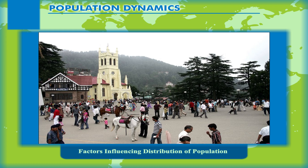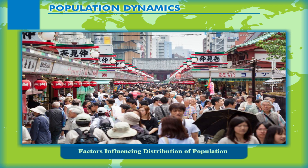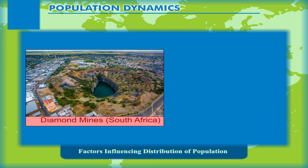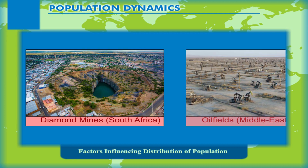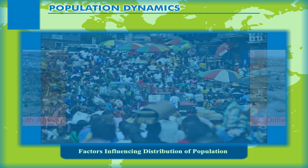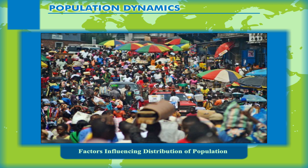Availability of resources also attracts people to an area because more opportunities of employment are available there. Some regions are rich in minerals, like the diamond mines of South Africa and the oil fields of the Middle East. The discovery of minerals in these parts of the world has attracted a large chunk of human population.